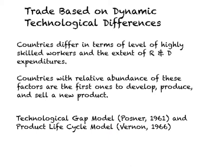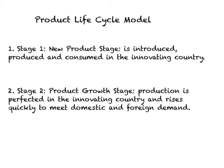Let us examine the product life cycle model. According to this model, a product goes through five stages. Stage one is also called the new product stage. At this stage, the product is introduced, produced, and consumed in the innovating or technologically advanced country.